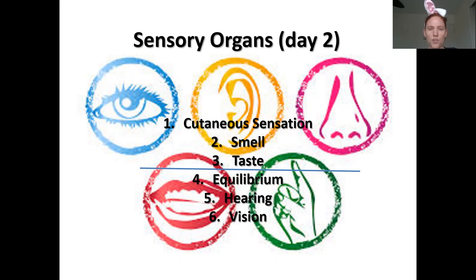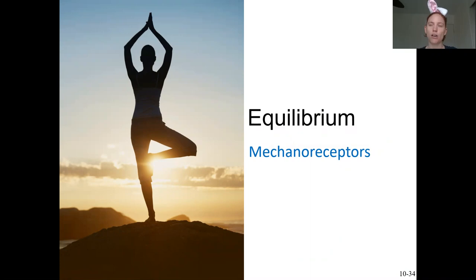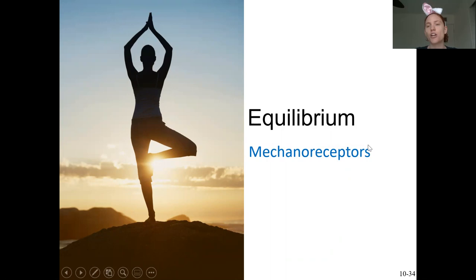We are moving on with the sensory organs, continuing with the special senses. The previous lecture covered smell and taste, and now we're doing equilibrium. Equilibrium is your sense of balance; it also helps you monitor gravity and any kind of movement, and it is located in the inner ear. The functional classification for the receptors that monitor equilibrium are mechanoreceptors, which activate when they change shape.